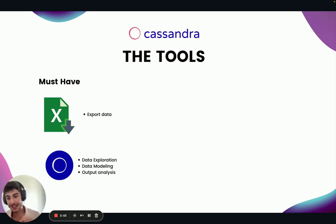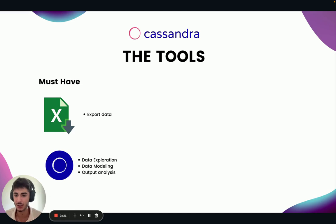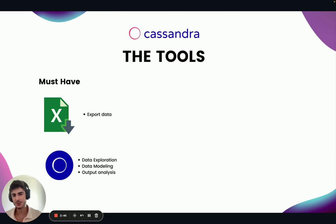The second tool that we need to use is Cassandra. Cassandra is used for data exploration, data modeling, and output analysis. It's extremely efficient and simplifies everything for you. There's no coding skills required to start a marketing mix modeling project, or even statistical skills. Cassandra is really cool because it allows you to have a 15-day free trial, and because we're doing everything in one day, it's going to be completely free for you.